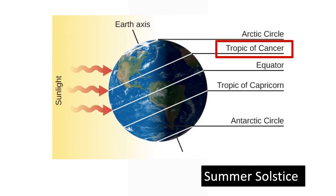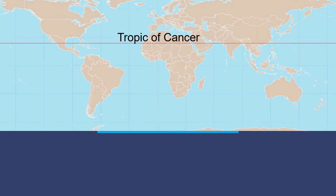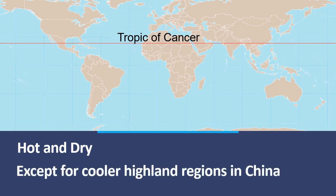The Tropic of Cancer lies at 23.5 degrees north of the equator, and marks the most northerly latitude at which the sun can appear directly overhead at noon. This event occurs at the summer solstice, when the Northern Hemisphere is tilted towards the sun to its maximum extent. The climate at the Tropic of Cancer is generally hot and dry, except for cooler highland regions in China and easterly or coastal areas.